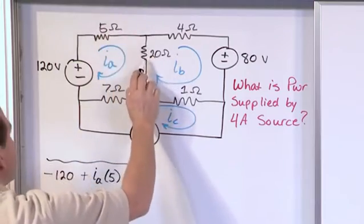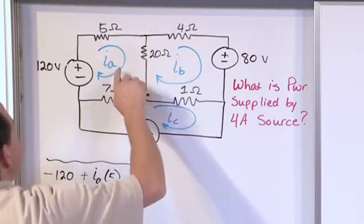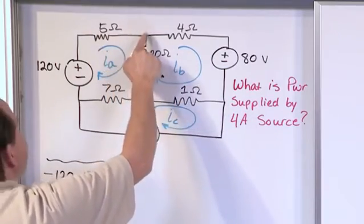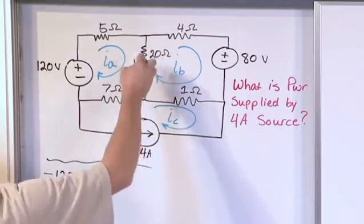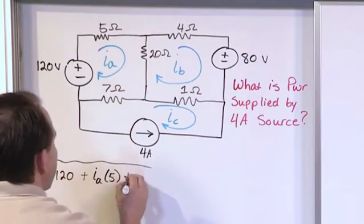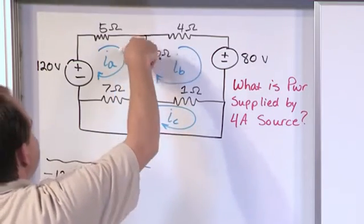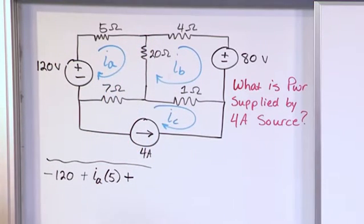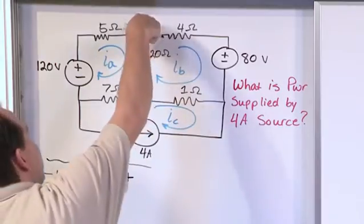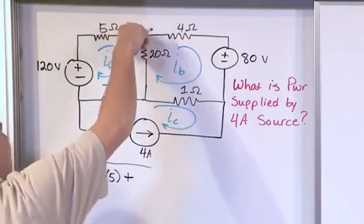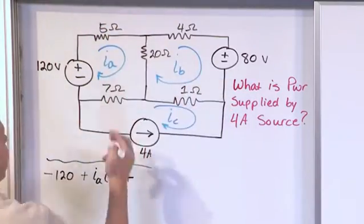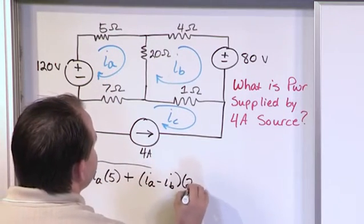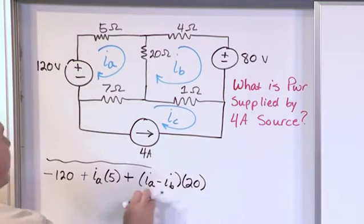Now when we get to the 20 ohm resistor, we're sharing with these two meshes here. So IA is here and IB is here. When we're traveling around this direction, we make the assumption that the current really is going down so that we can write a plus sign here. Because if the current is going down, then there's an implied voltage drop from here to here. So if the current's really going down, then it's got to be IA minus IB, which is fighting it. The resistance is 20. So this is V equals IR.